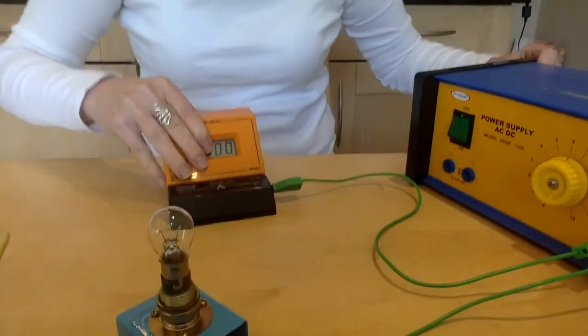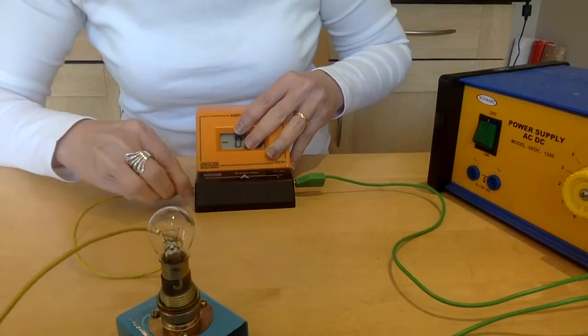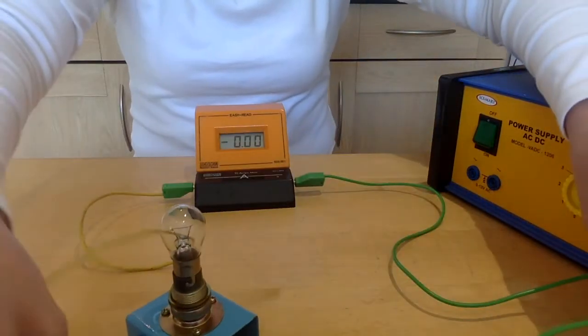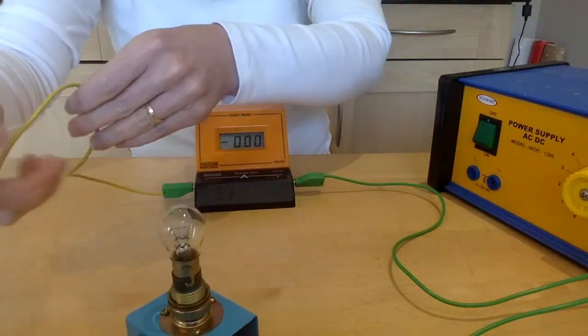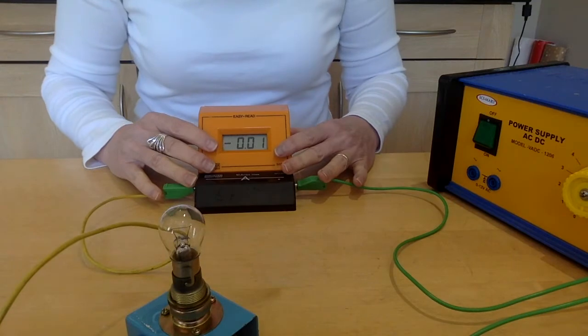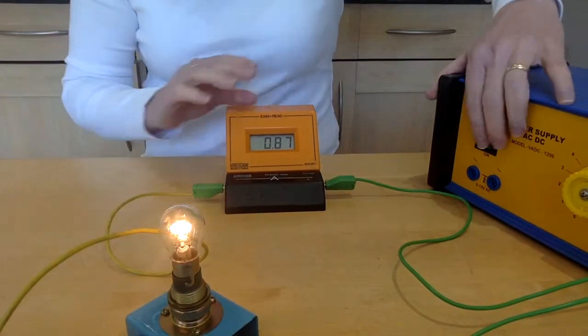Can you see that? It's just a loop going from the supply to the bulb, other side of the bulb and back round to the power pack again. So that's my circuit with my bulb in.